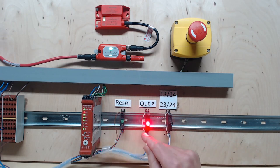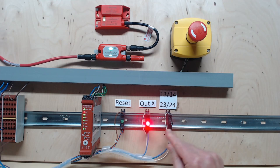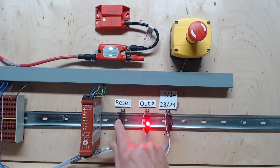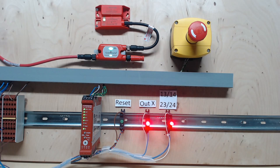Notice that the out X output is on and the 13-14, 23-24 safety outputs are off. Press and release the reset button. The safety outputs turn on.